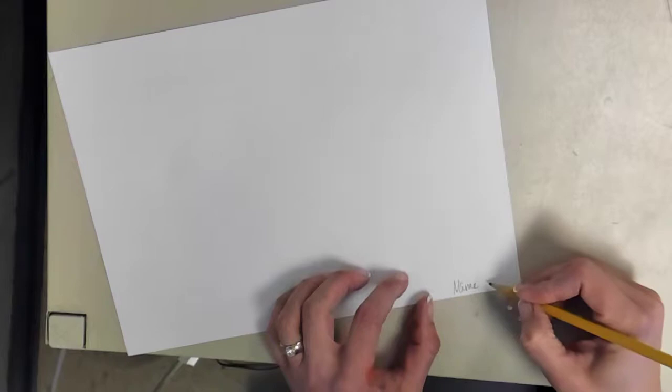First grade, today we're going to make a monoprint of a butterfly. You're going to put your name on it and your first grade and your teacher's initial, and then you're going to take the paper and flip it over. Then I want you to fold it in half the wide way.